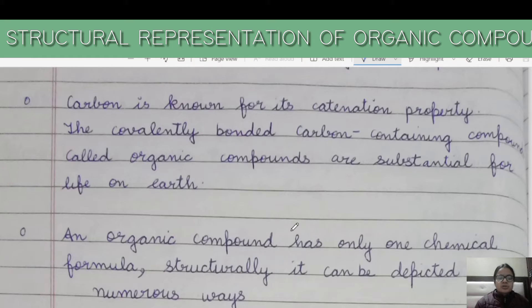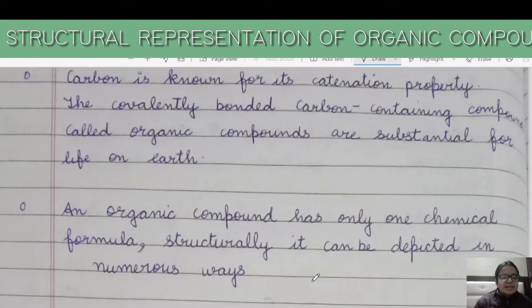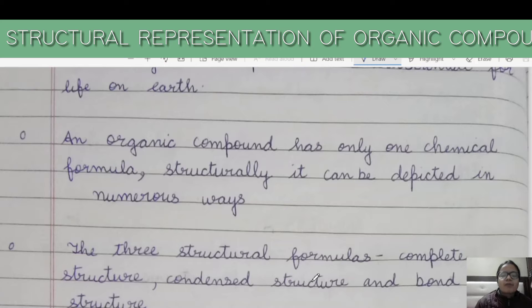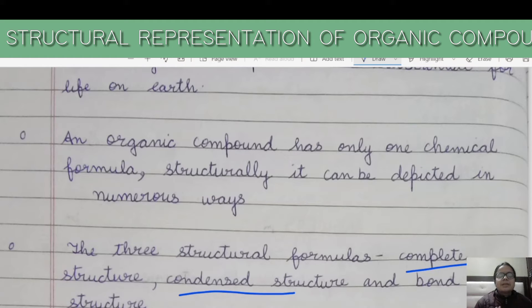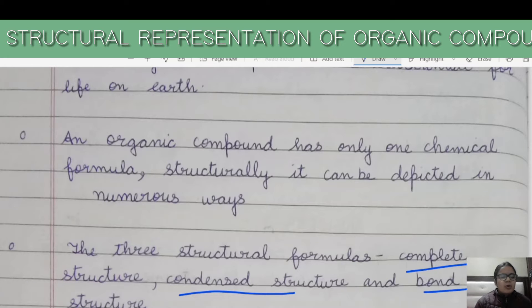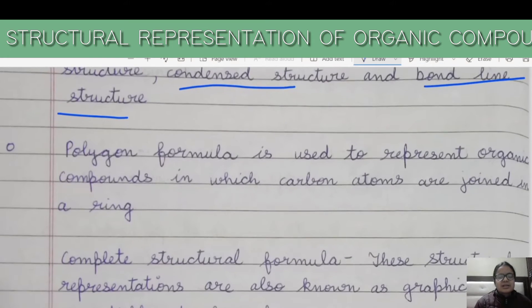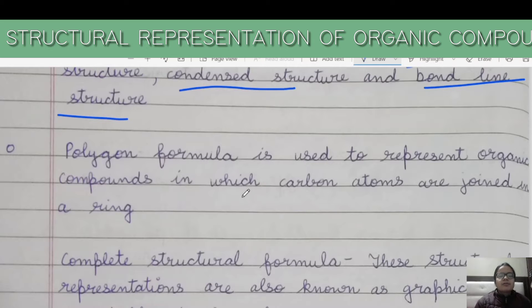There are three structural formulas: the first is the complete structure, the second is the condensed structure, and the third is the bond line structure. We will discuss these with questions. The polygon formula is used to represent organic compounds in which carbon atoms are joined in a ring.